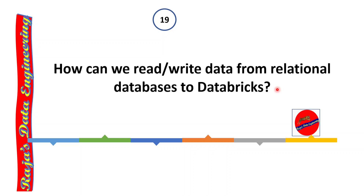How to read and write data frames from relational databases in Databricks? We use the JDBC connector. JDBC connections can be a performance bottleneck, so to overcome that we can enable concurrent connections using partitioning. Key options include numPartitions to set the number of partitions, the partition column (partition key), lowerBound, and upperBound. These options allow parallel reads from relational databases.